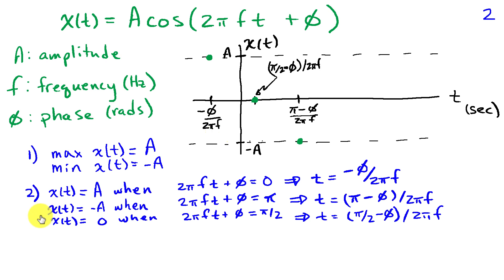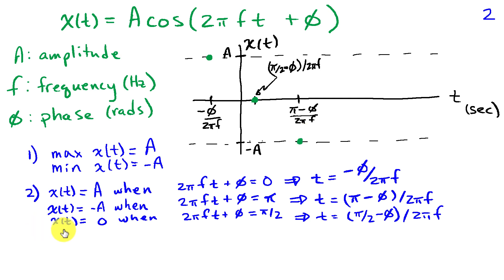Similarly, we can find a minimum by solving for x(t) = −A, which implies the argument 2πft + φ equals π. So t = (π − φ)/(2πf), and at that point we assign the value −A. A zero crossing occurs when the argument equals π/2, so we set 2πft + φ = π/2, giving t = (π/2 − φ)/(2πf).